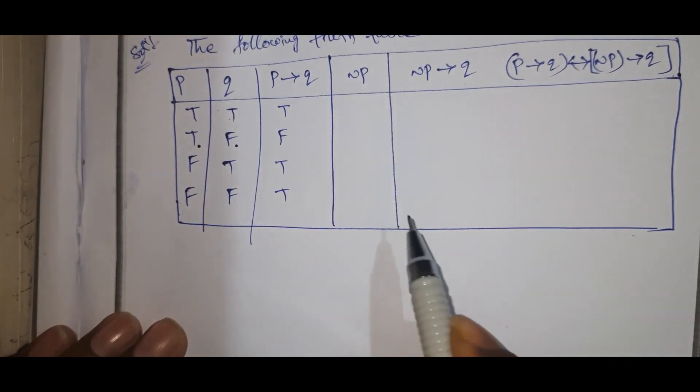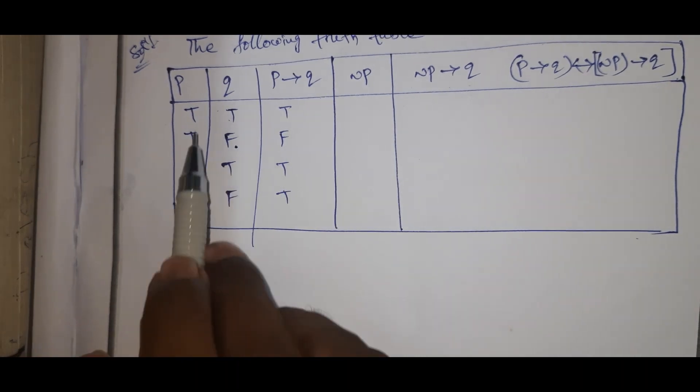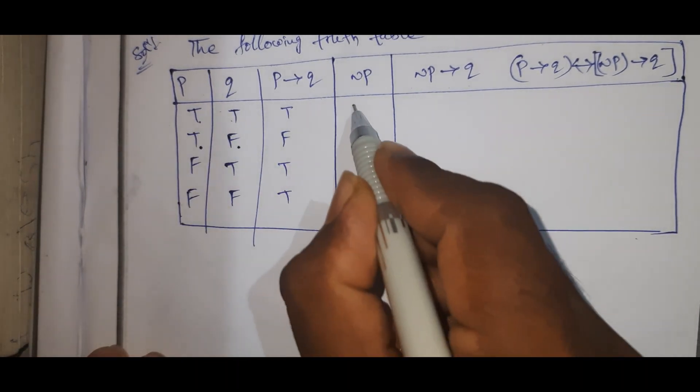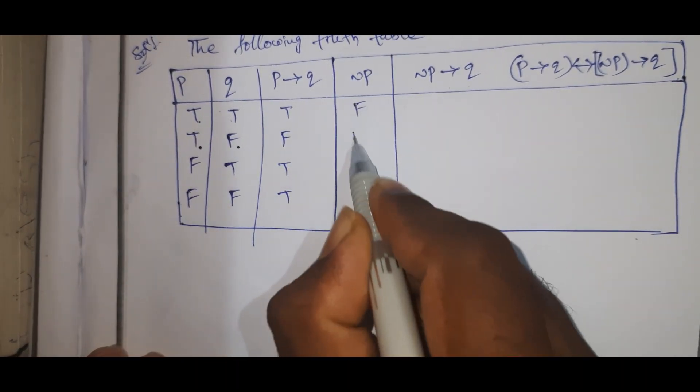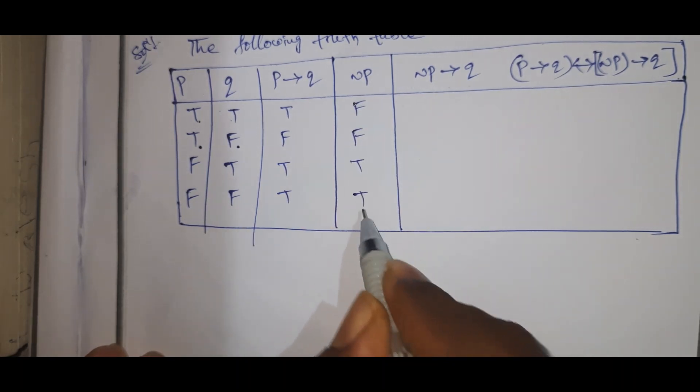The negation P column values are: false, false, true, true.